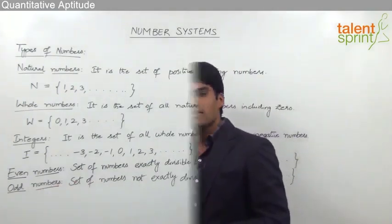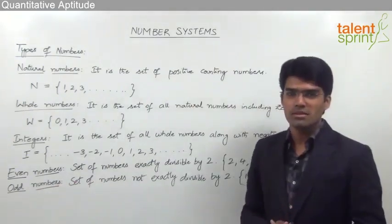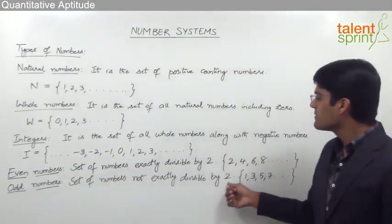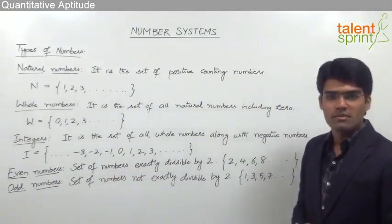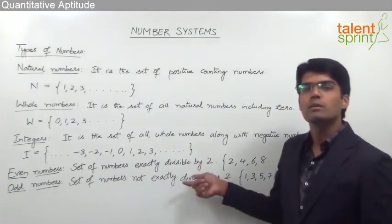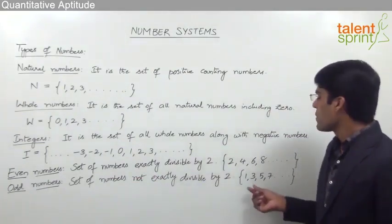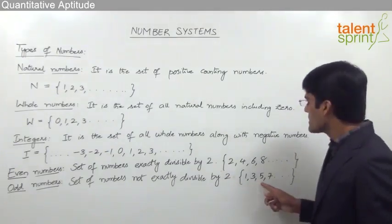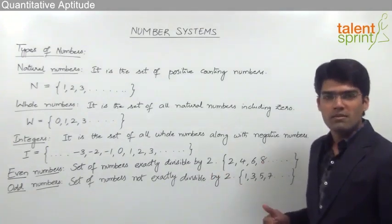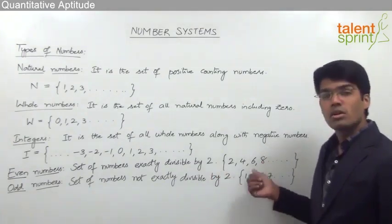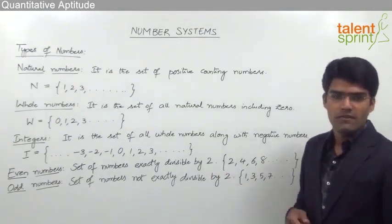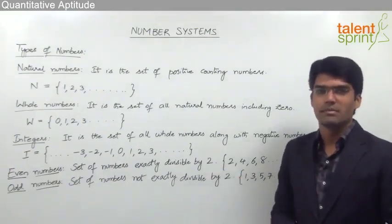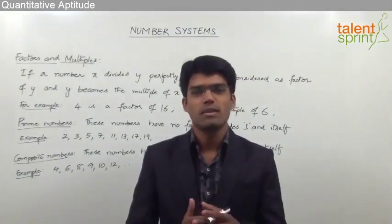Odd numbers are those numbers which are not exactly divisible by 2. The set of numbers which are not exactly divisible by 2 is referred to as odd numbers, or we can say numbers which are not even are odd. So 1, 3, 5, 7 and so on are examples of odd numbers, as all these numbers are not the exact multiples of 2. So if a number is divisible by 2 it is even, otherwise it is considered an odd number.